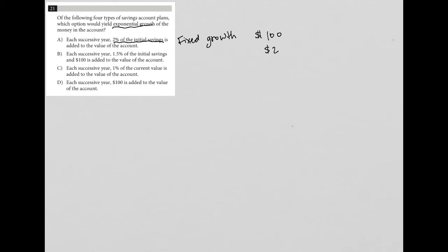That's definitely not exponential growth. So choice B, each successive year, 1.5% of the initial savings and $100 is added to the value of the account. So same or similar type of situation. Instead of $2, you're going to get $1.50. If you had initially opened the account with $100, but then on top of that, you're going to get an additional $100.